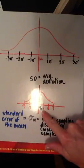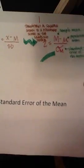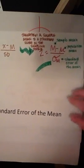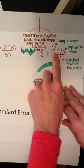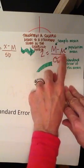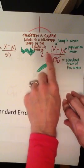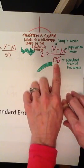Remember, this is our sampling distribution here. Let's go through and talk about these different components. Z is equal to the sample mean minus the population mean divided by the standard error of the mean.